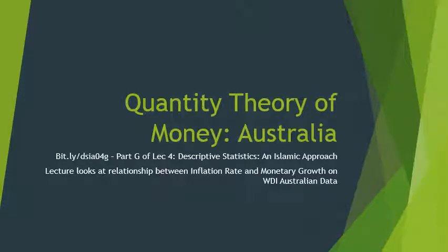Bismillahirrahmanirrahim. This is Part G, the seventh part of Lecture Four: Descriptive Statistics and Islamic Approach. This lecture looks at the quantity theory of money.